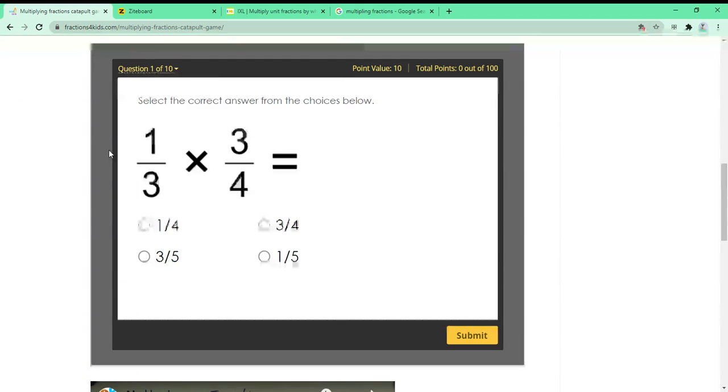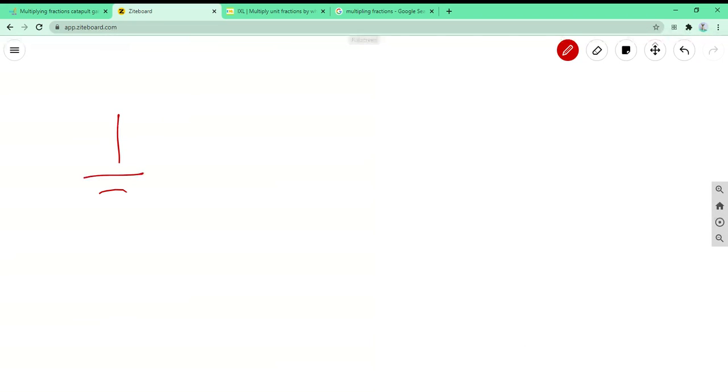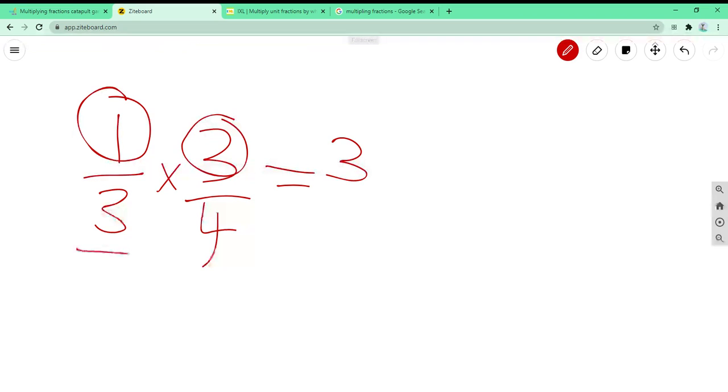So it's asking us a question. It's saying 1 over 3 times 3 over 4. So let's write it down. 1 over 3 times 3 over 4. And then you know that you have to do 1 times 3, which is 3.